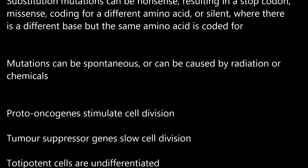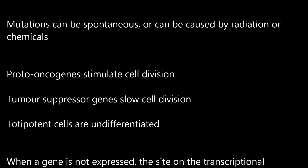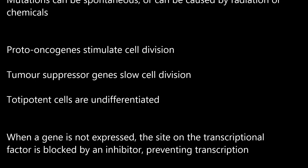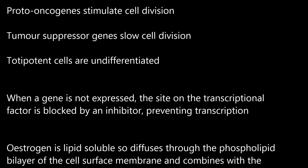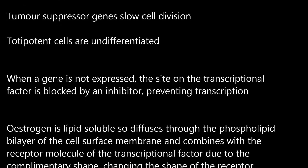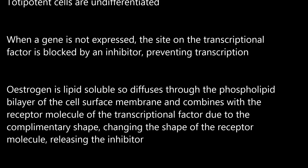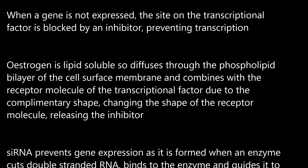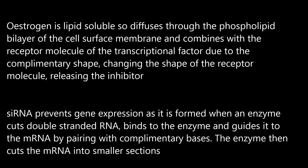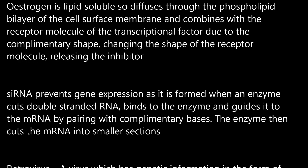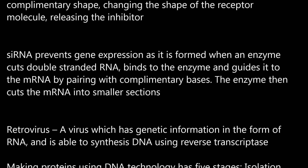Mutations can be spontaneous, or caused by radiation or chemicals. Proto-oncogenes stimulate cell division; tumour suppressor genes slow cell division. Totipotent cells are undifferentiated. When a gene is not expressed, the site on the transcriptional factor is blocked by an inhibitor, preventing transcription. Oestrogen is lipid-soluble so it diffuses through the phospholipid bilayer of the cell surface membrane and combines with the receptor molecule of the transcriptional factor due to the complementary shape, changing the shape of the receptor molecule and releasing the inhibitor. siRNA prevents gene expression as it is formed when an enzyme cuts double-stranded RNA, binds to the enzyme and guides it to the mRNA by pairing with complementary bases, and the enzyme then cuts the mRNA into smaller sections. A retrovirus is a virus whose genetic information is in the form of RNA and is able to synthesise DNA using reverse transcriptase.